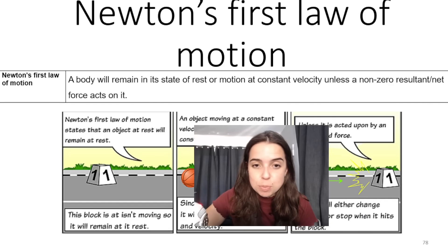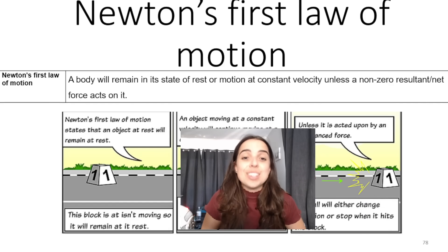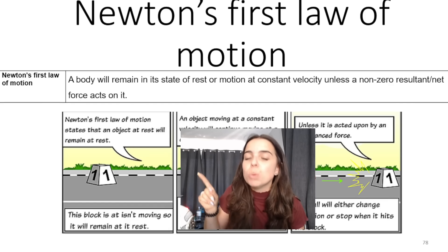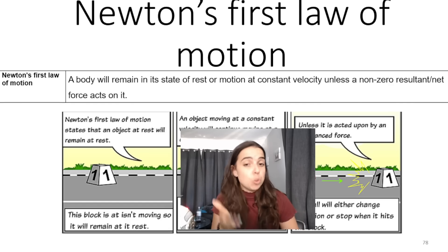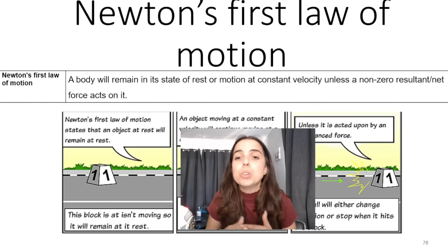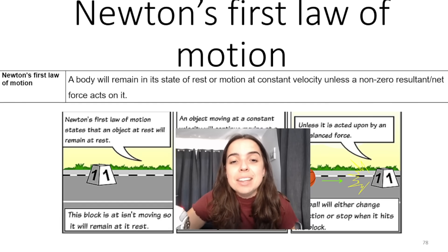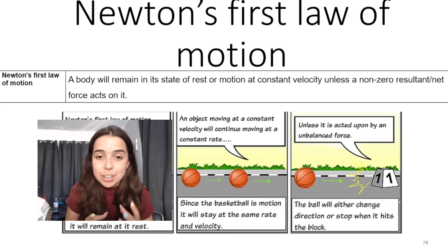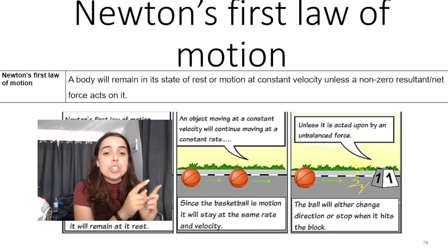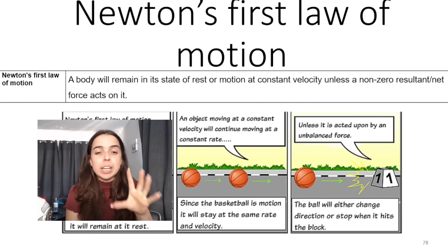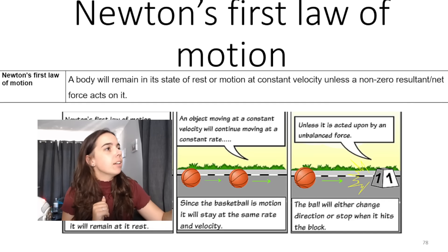Looking at these pictures, Newton's first law states that an object will remain at rest — that cone or block over there is not moving and will stay still. Until something causes it to move. If someone comes and pushes it, a non-zero net force — a pushing force — acts on it. Similarly, an object moving at a constant velocity will continue moving at that same velocity. If a basketball is in motion on a truly frictionless surface, it will stay in motion forever, according to Newton's first law.